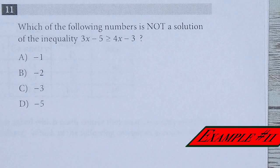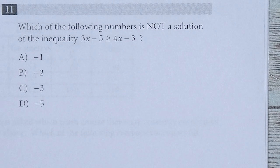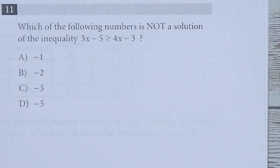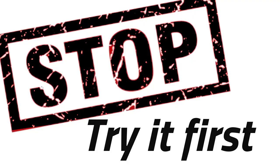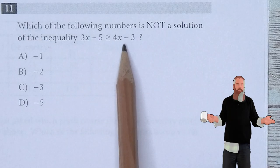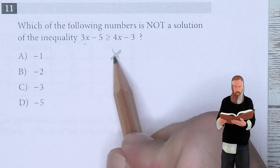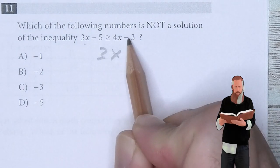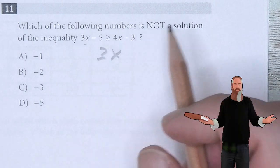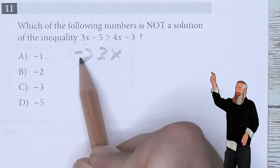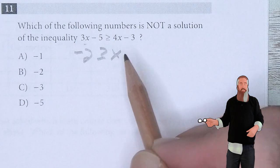Which of the following numbers is not a solution to the inequality 3x minus 5 is greater than or equal to 4x minus 3? Just dealing with this inequality, if I move 3x to the other side, I wind up with an x all by itself. Move 3 to the other side, I wind up with negative 2 is greater than or equal to x.